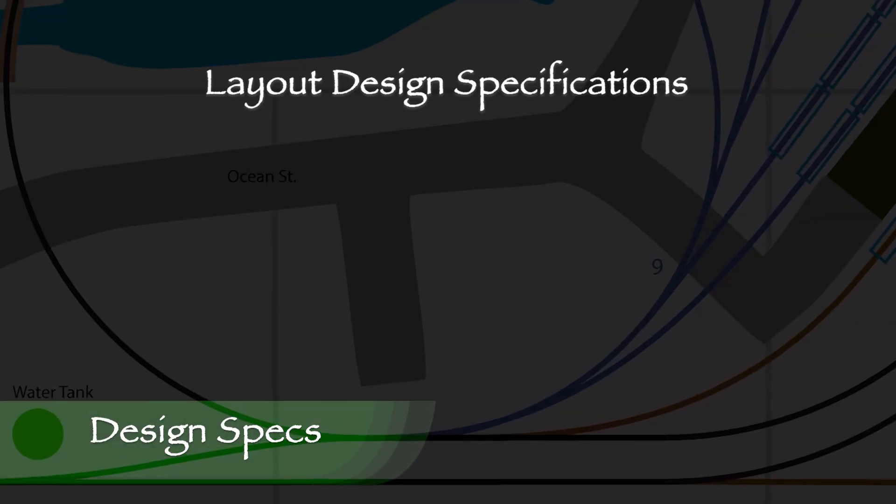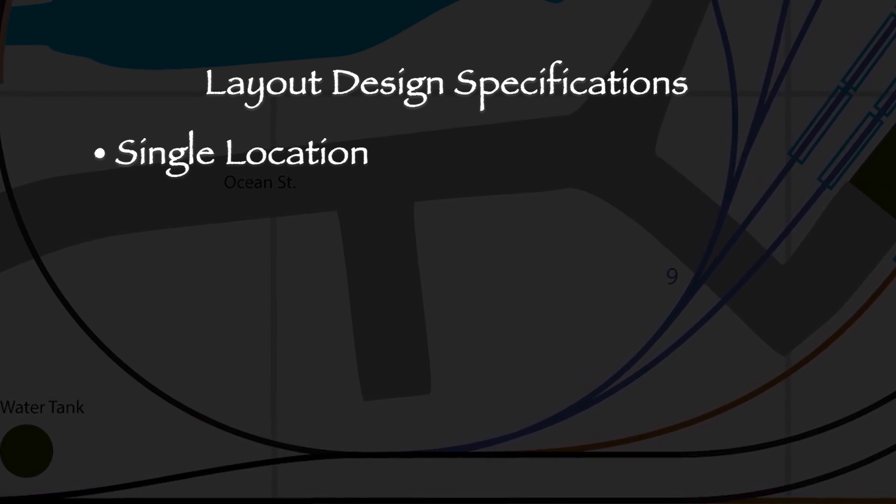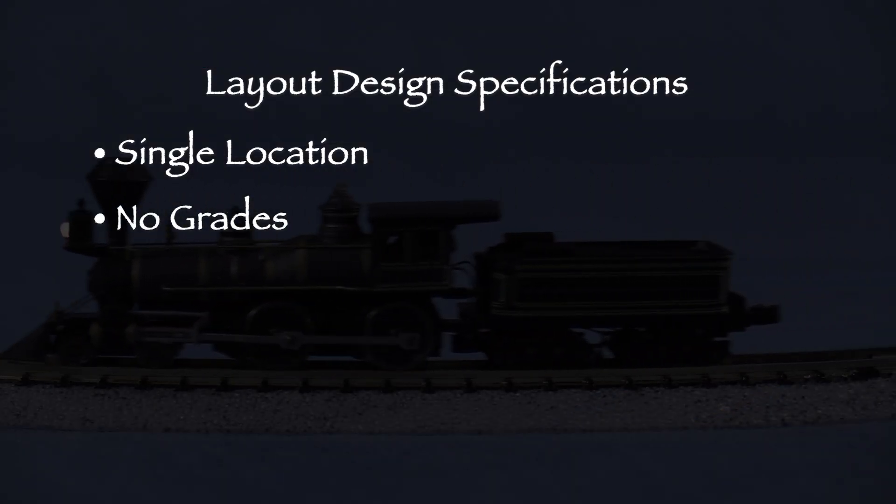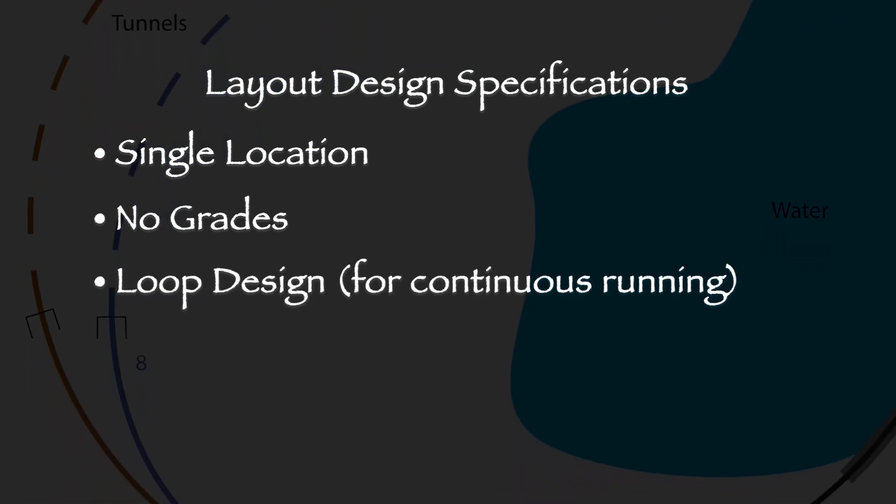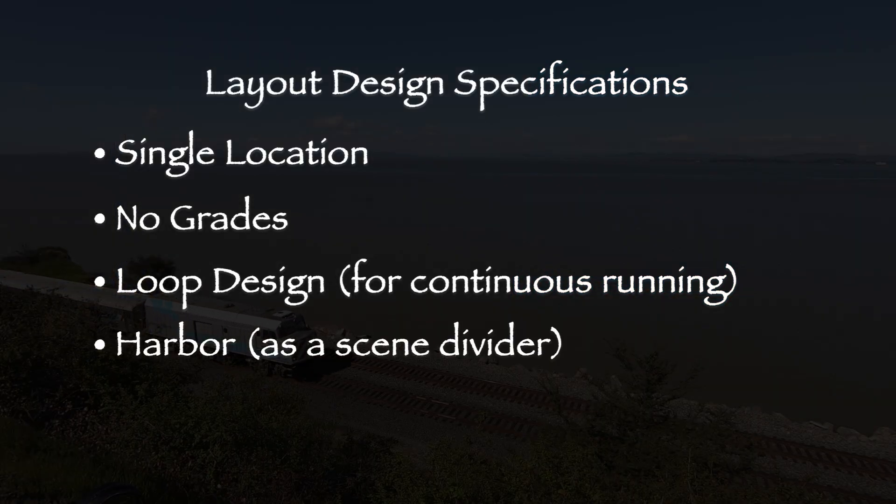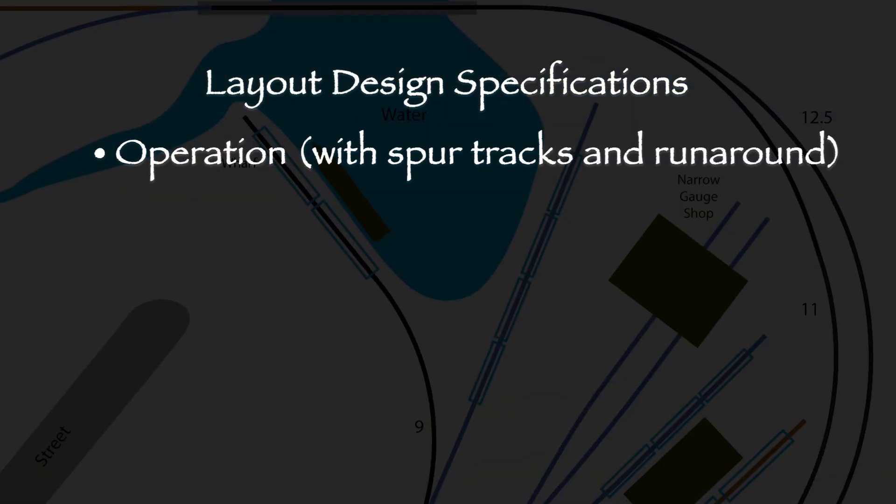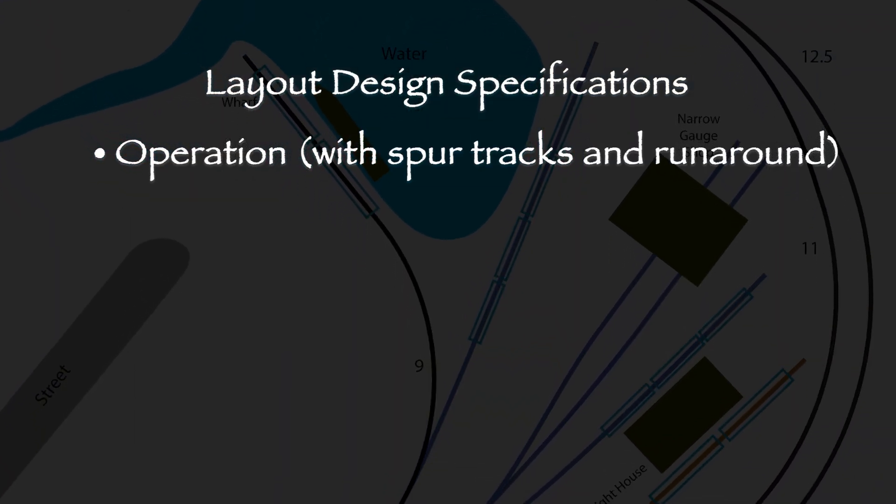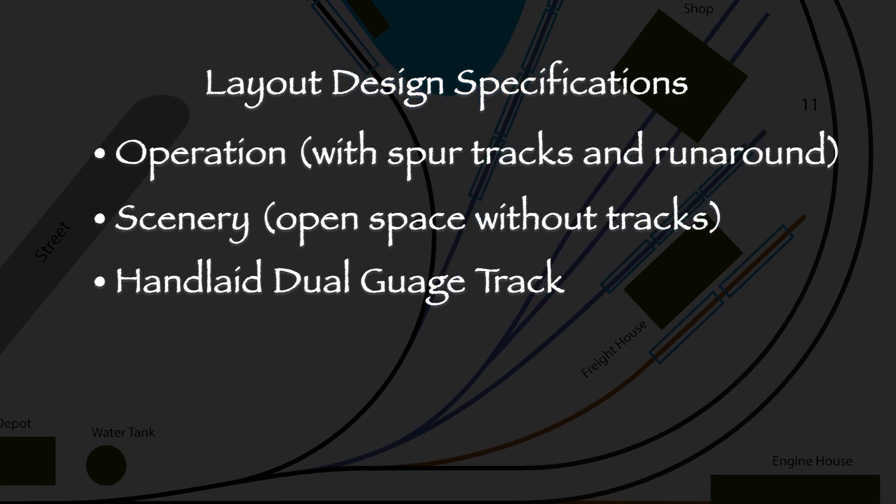All of the plans on this page share several design specs in common. The layout represents a single town. It's really too small to credibly represent multiple locations. Though the scenery may have some hills and low spots, the track itself is pancake flat. Having all the track at the same level will simplify construction. A loop gives the option for continuous running when you just want to chill and watch trains go by. A small harbor divides the layout into two distinct halves. Most of the track is on the right side in these plans. The left is more open for scenery. I envision that the right side will be on the aisle in the RV when the layout is in use. Each plan has some spur tracks and a runaround track so that cars can be switched. Each plan has enough open space for scenic elements. I am going to attempt to hand lay N and NN3 dual and single gauge track.